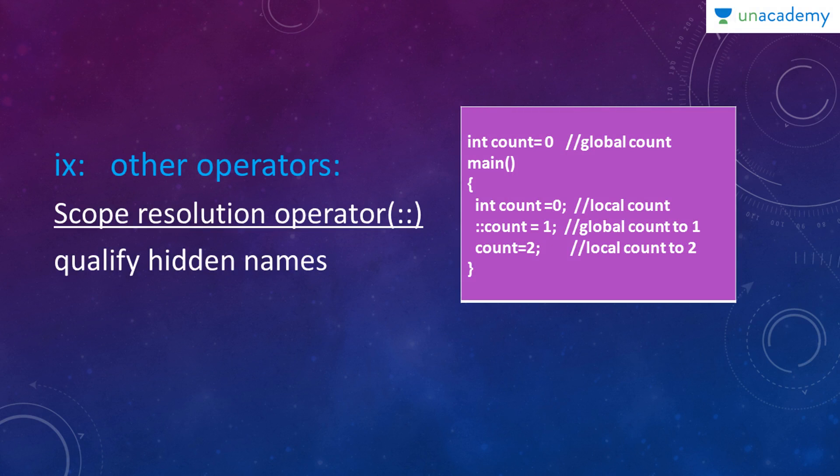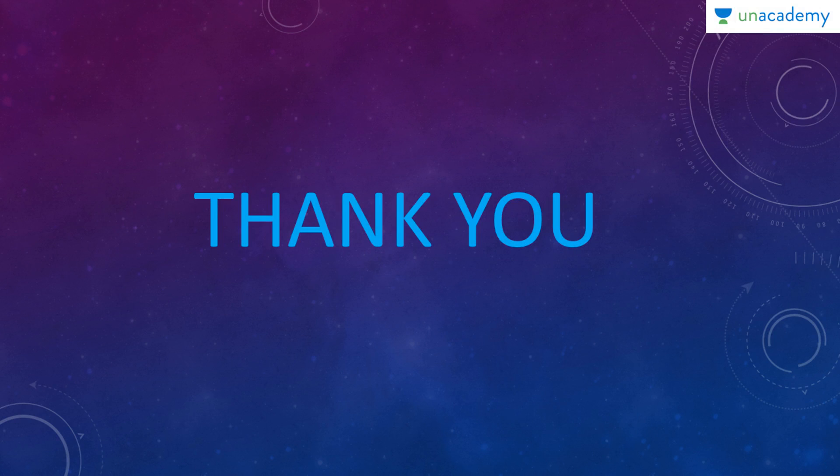Next is the other operator. Other operators are the scope resolution operator. It is used to qualify hidden names. For example in this small program segment, first we have int count equals to zero that is a global count. Once you enter the main you again declare int count equals to zero which is a local count and then once you want to increment this count you'll have to use a scope resolution operator that is two colons, count equals to zero and then here you have count equals to two. This is to increment the local count to two.